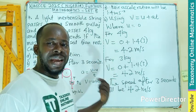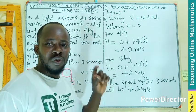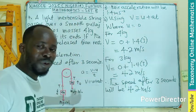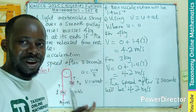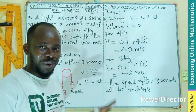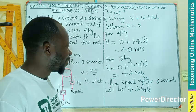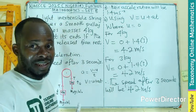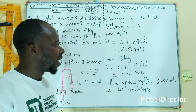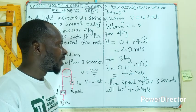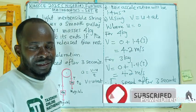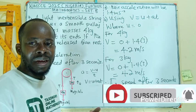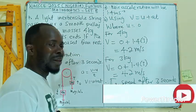The speed after three seconds is 4.2 m/s for both masses. The concept should now be clear. If you like this video, please share it. If you find it helpful, subscribe to the channel and come back for question number eight.